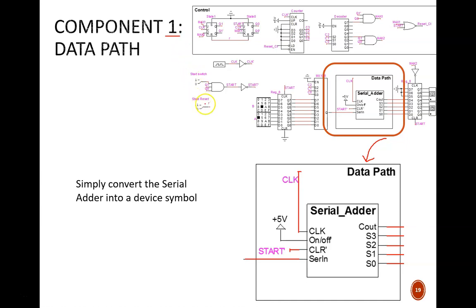The first component I'll show is the data path. This is the same serial adder we have focused on the past few lessons, just condensed into a device symbol. We can see the serial data input, the control inputs, and the outputs for the final sum. Note how small this data path is compared to the overall circuit. This is partly a result of not having status signals available, which makes the control circuit more complicated.